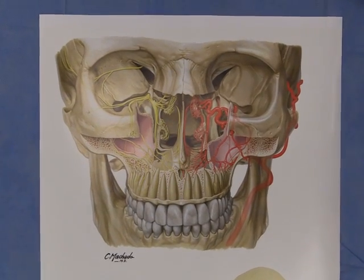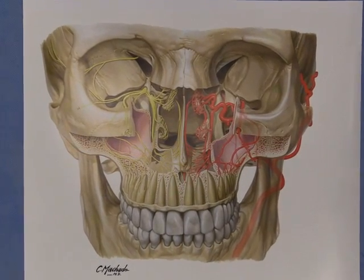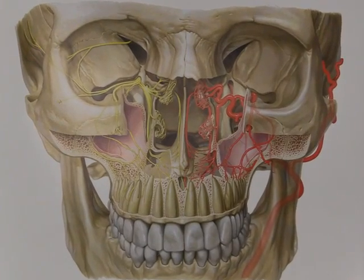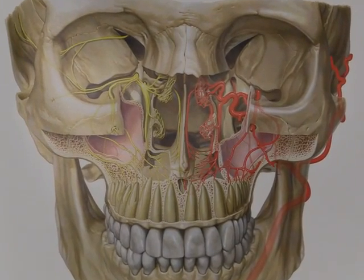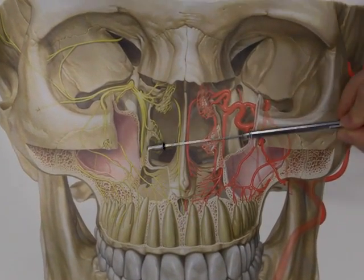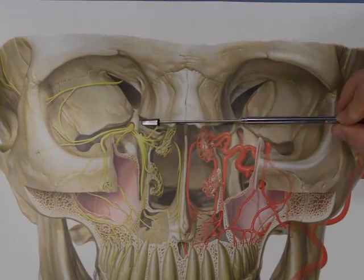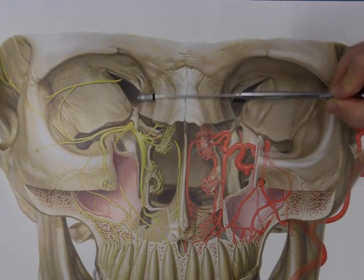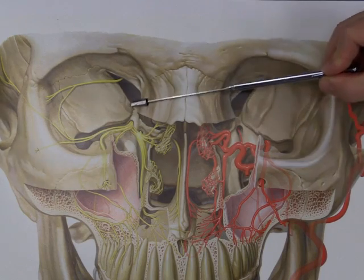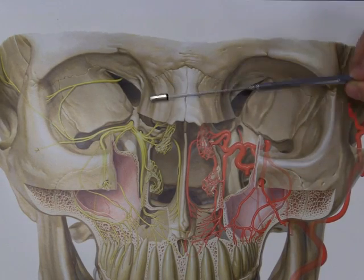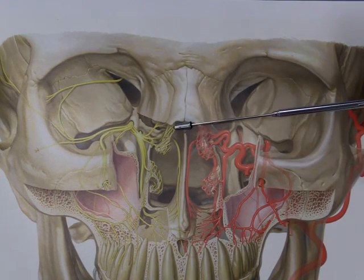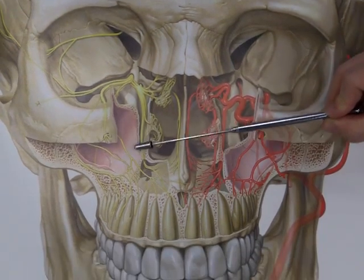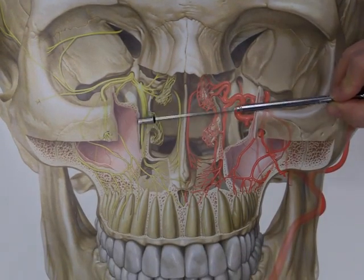One of the beautiful things about this plate is that it demonstrates the many unique and beautiful relationships between the pterygopalatine fossa and neighboring areas, including the orbit, the nasal cavity, the maxillary sinus, and the hard palate.